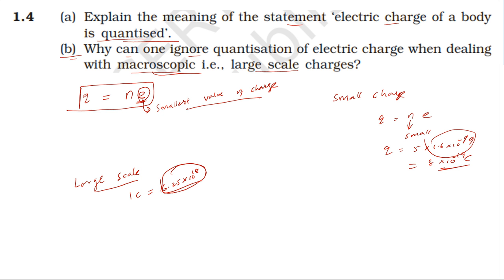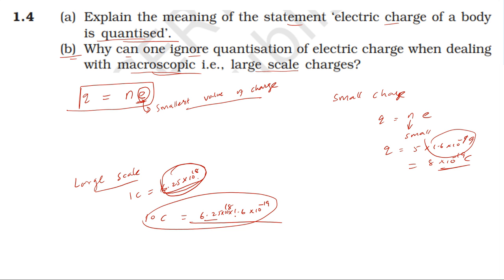When we calculate: 6.25 times 1.6 into 10 to the power 18 times 10 to the power minus 19, the result is an integer with no fraction. The quantization of charge is extremely small relative to macroscopic charges, so the discrete nature becomes negligible and we can treat macroscopic charge as continuous.